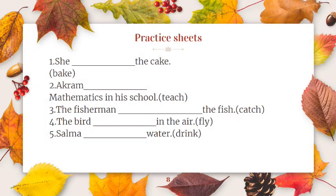Now practice using the verb given in brackets to complete each sentence in present continuous tense. She [bake] the cake — She is baking the cake. Akram [teach] mathematics in his school — Akram is teaching mathematics in his school. The fisherman [catch] the fish — The fisherman is catching the fish. The bird [fly] in the air — The bird is flying in the air. Salma [drink] water — Salma is drinking water.